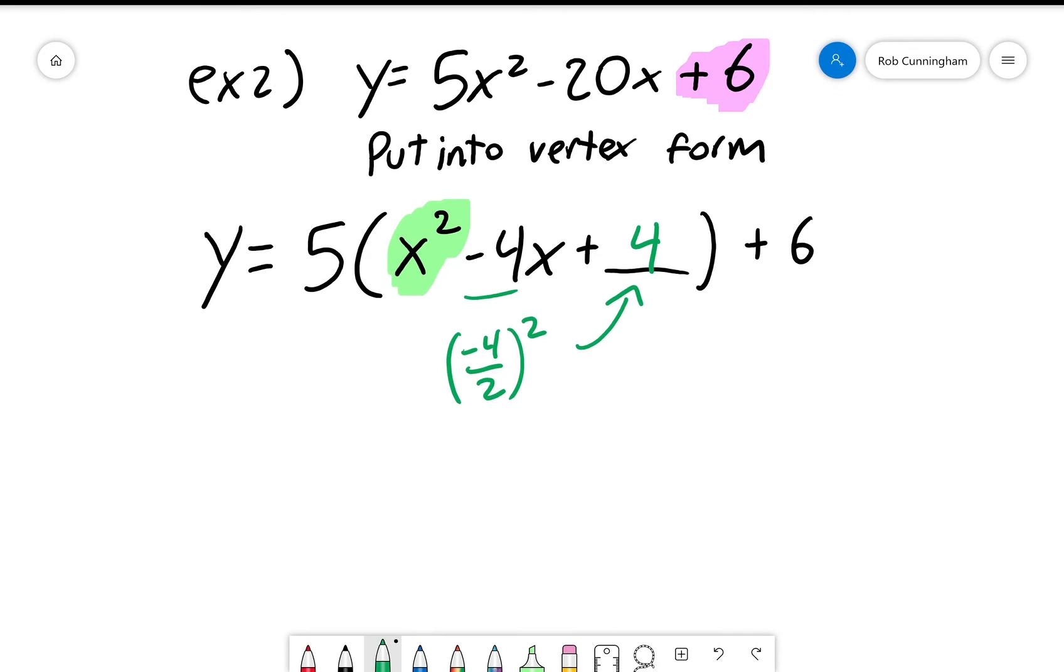Now normally what we did last time is we would have subtracted 4 off as well. However, I want to make it very clear we're not just subtracting 4. This 4 isn't just a 4. That 4 is 5 times 4. That 5 is still there—it's not gone anywhere. So that 4 is actually 4 times 5, which is 20. So I'm actually adding 20 with one hand, so I need to take away 20 with the other hand.